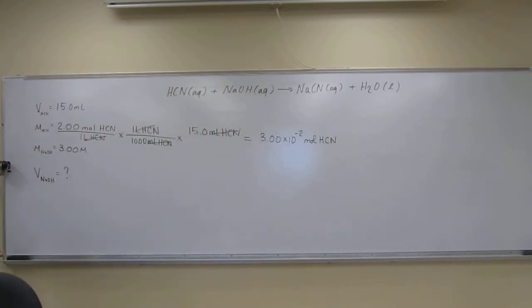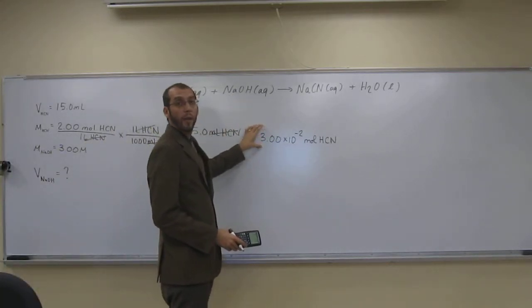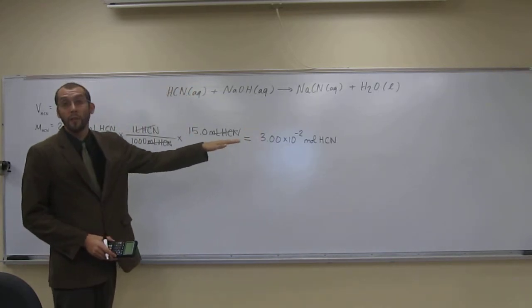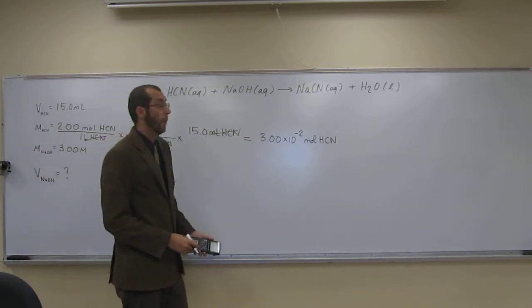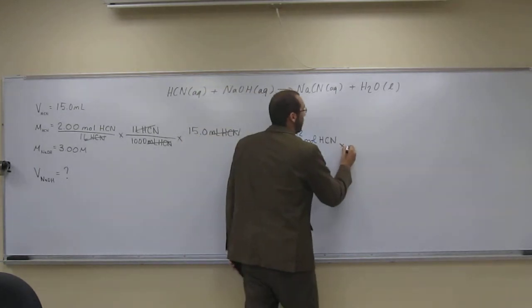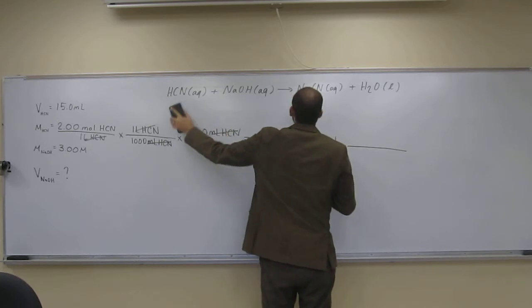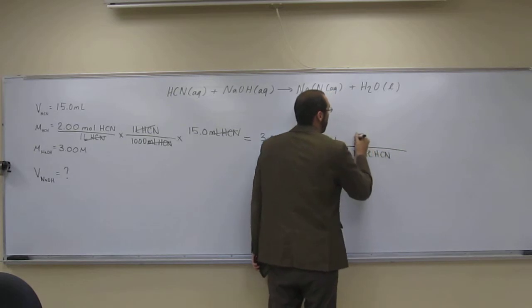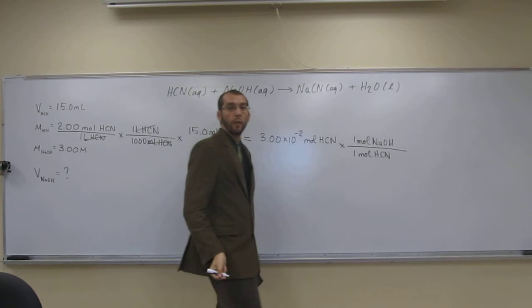So how many moles of NaOH are going to react completely with that many moles of HCN? 3.00 times 10 to the negative 2, because there's a 1 to 1 ratio here. If you can't come up with that on your own, you can do this. For every 1 mole of HCN you have, you've got 1 mole of NaOH reacting with it.